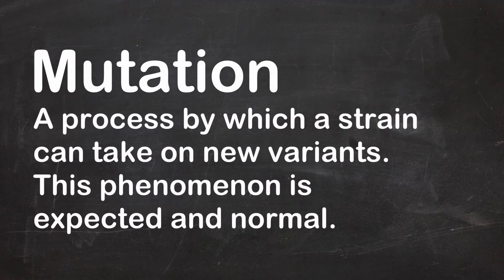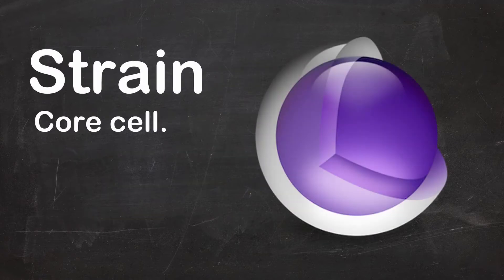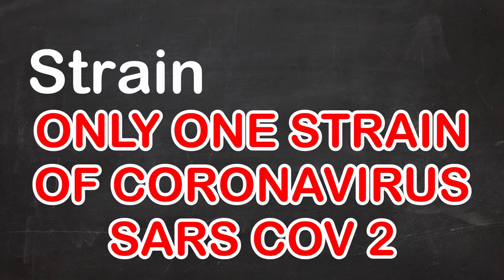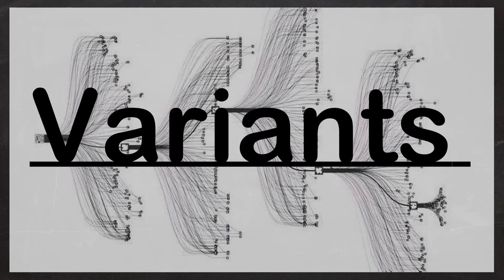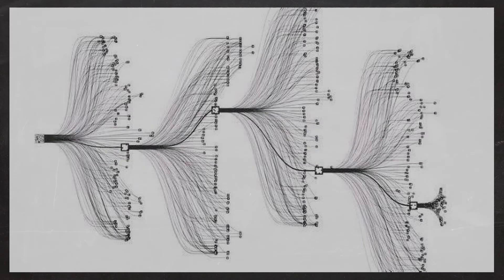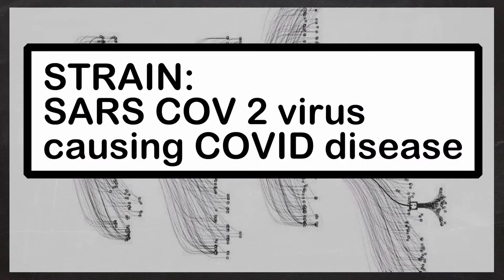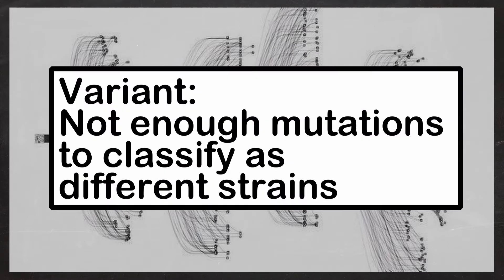A mutation is a process by which a strain can take on new variants. This phenomenon is expected and normal. A strain is a base, just like a core cell. There's only one strain of coronavirus known as SARS-CoV-2. From this strain, there will be many various mutations, and these seem to be called variants. Thus, in conclusion, the term strain is only appropriate when referring to the SARS-CoV-2 virus causing COVID disease.